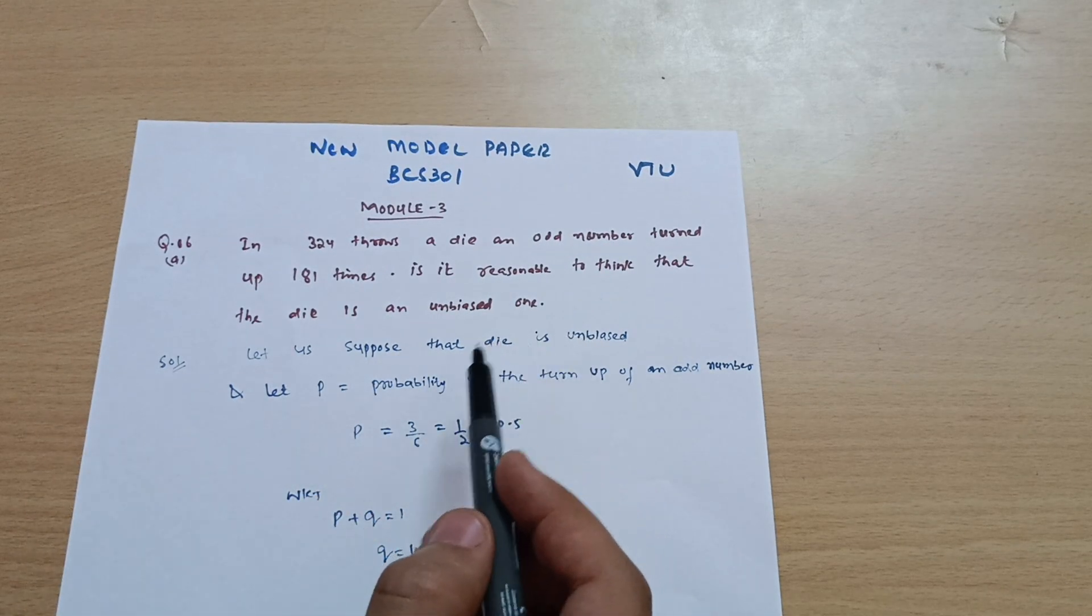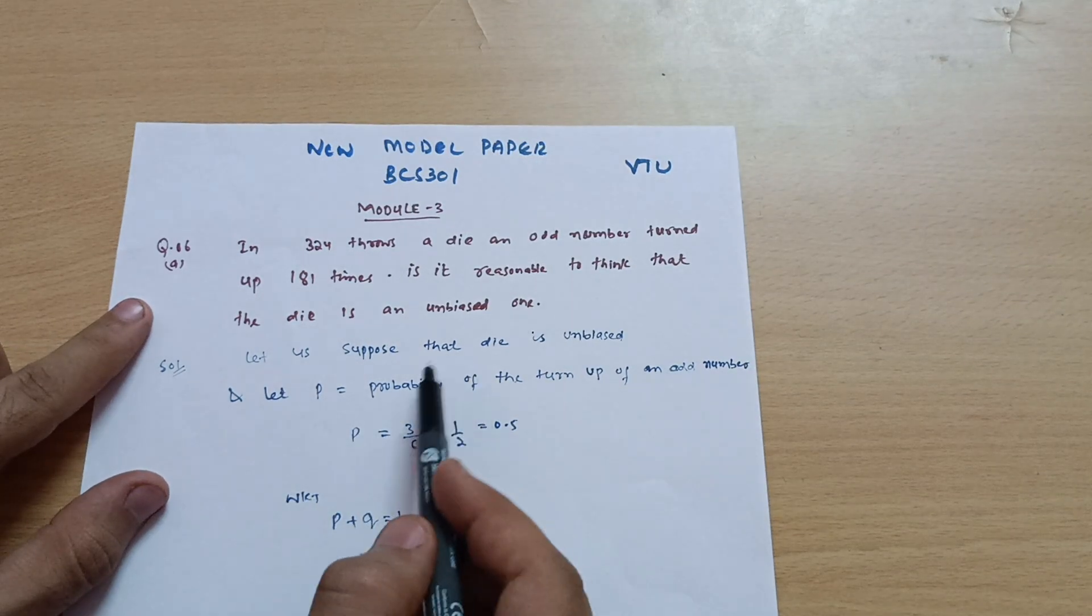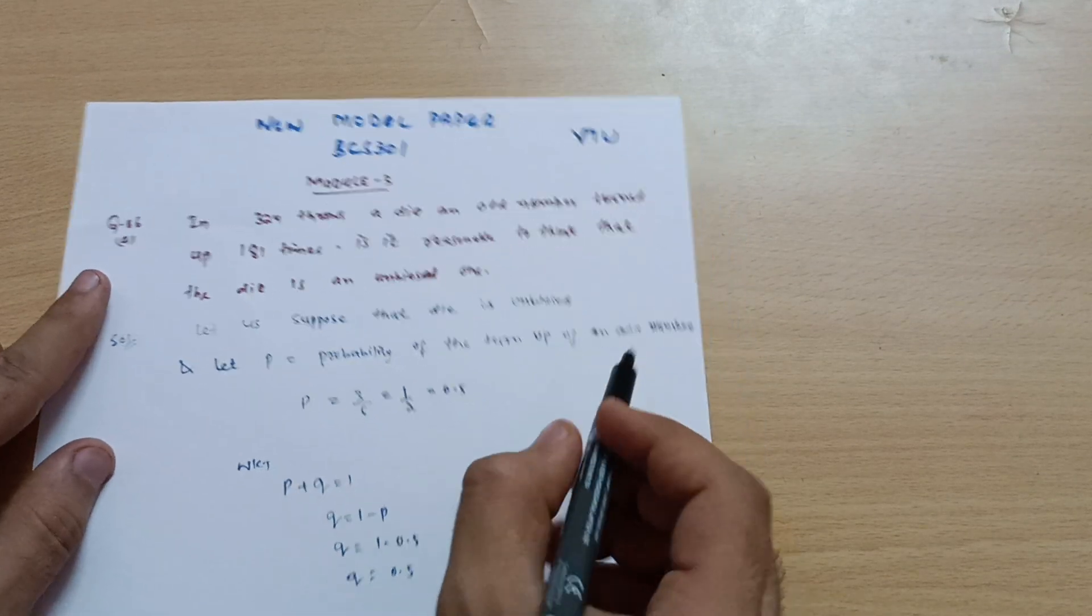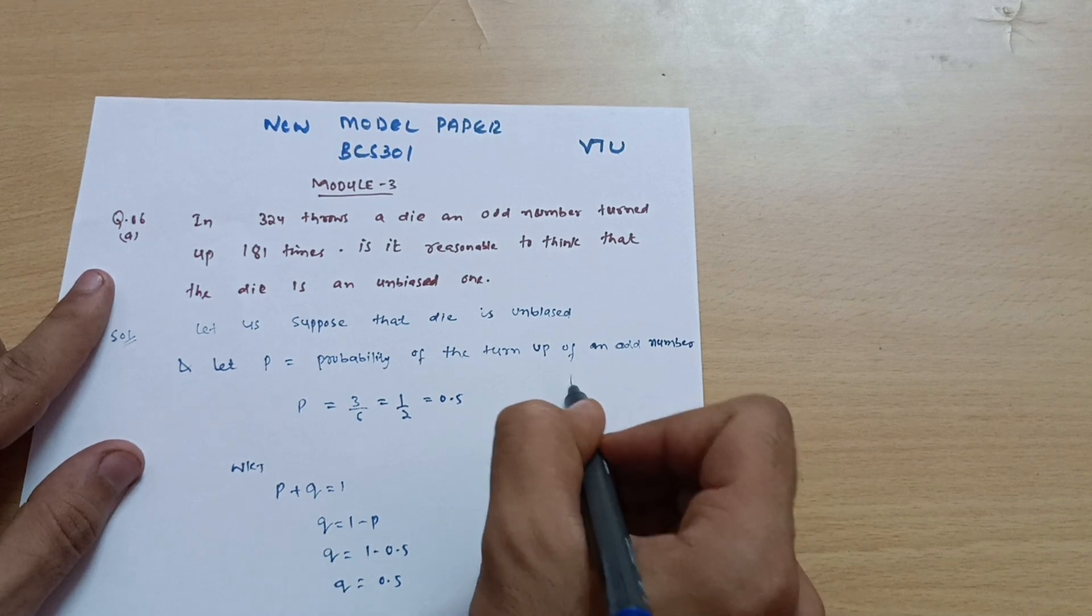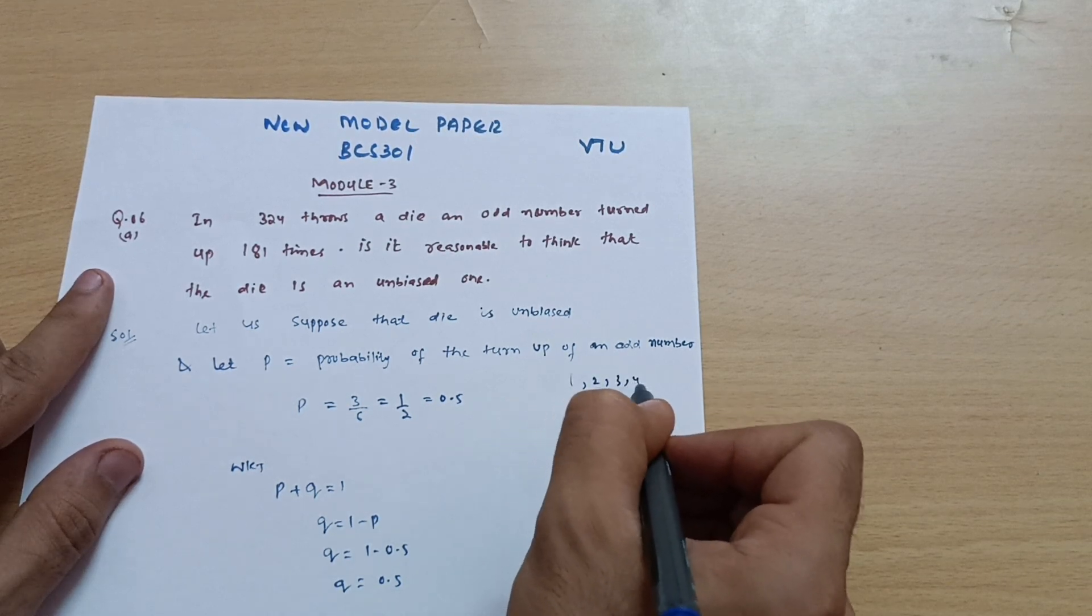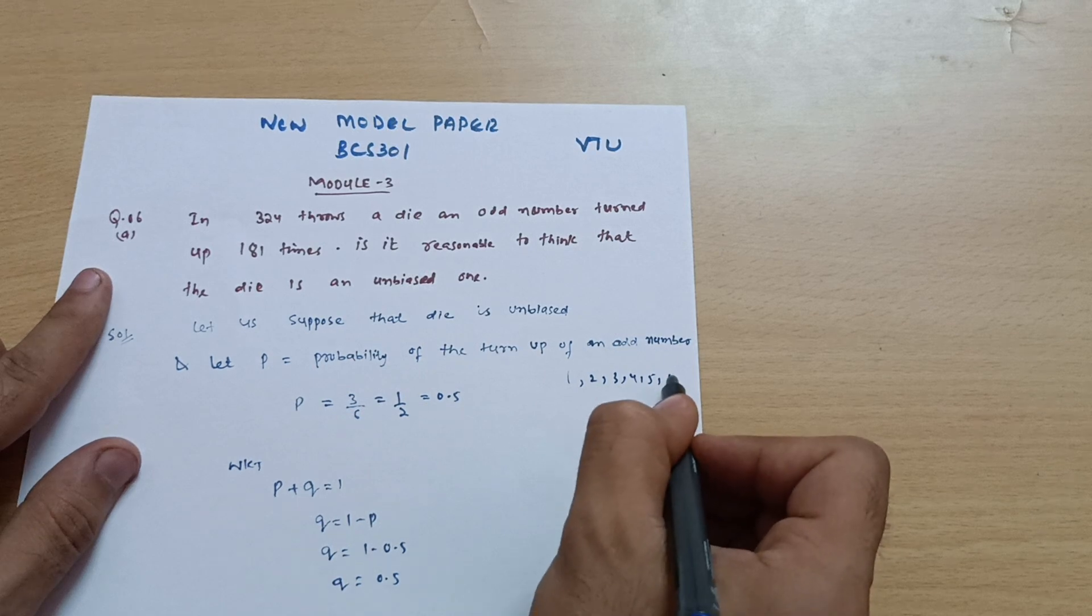So let's suppose that the die is unbiased. Firstly we will suppose it. Let p equal the probability of turn of an odd number. As you already know, a die has six faces: one, two, three, four, five, and six.